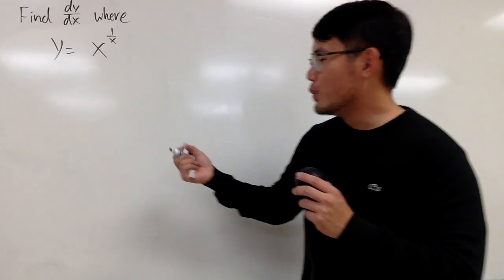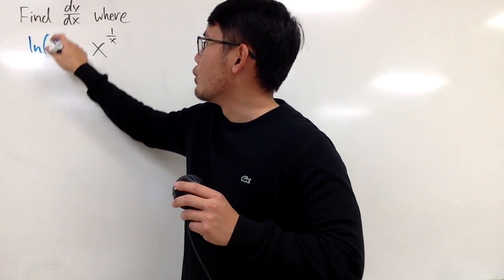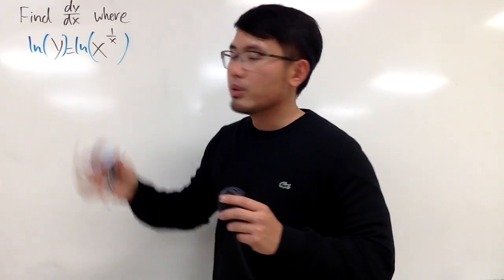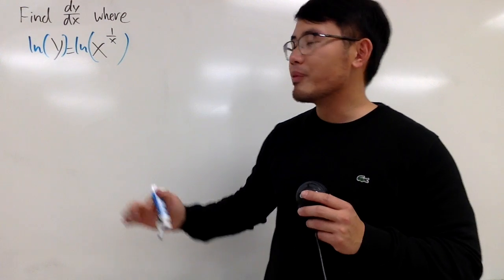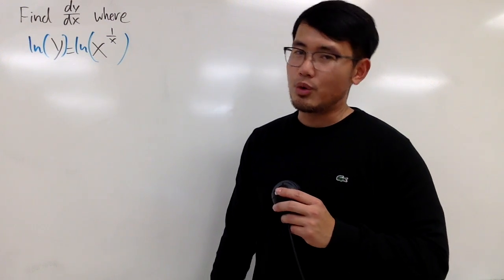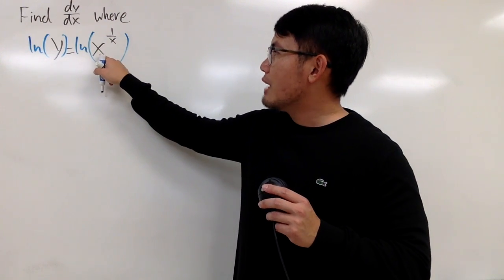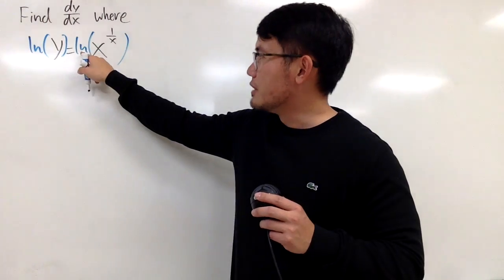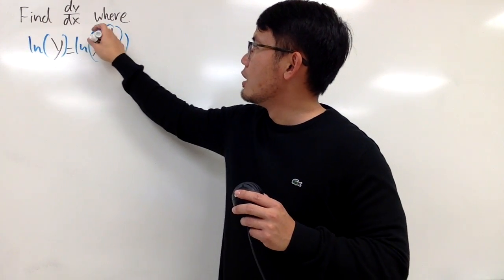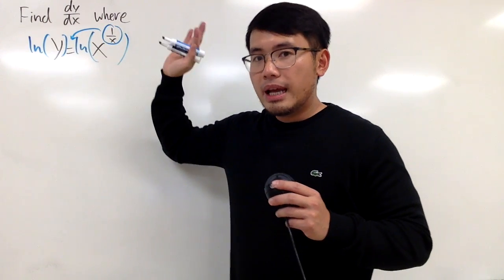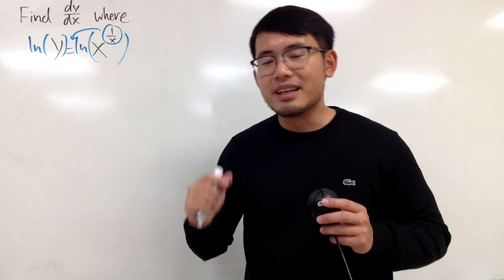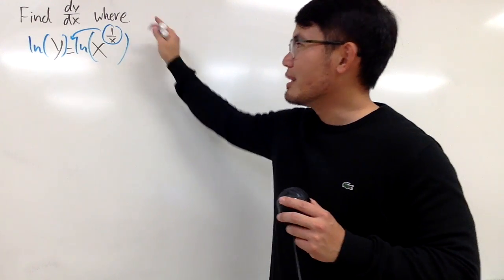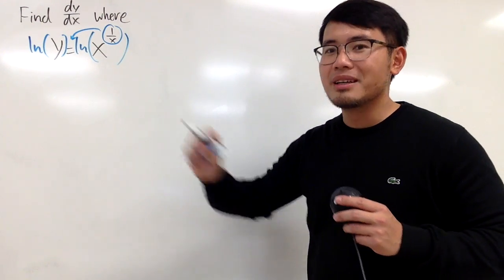What we're going to do is take the natural log on both sides so we can use the natural log property. When we have x to the 1 over x power inside the natural log, we can bring the power to the front. This is just the natural log property, so do not minus 1 or whatever. We're just doing algebra.